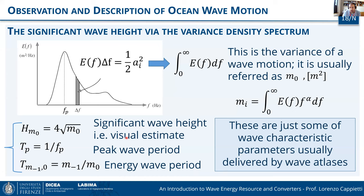A clarification on the formula: Mi is the spectral moment. When you set alpha equal to zero, you obtain M0, which is the integral of the spectrum. Since the spectrum represents variance for each frequency, taking the integral gives the total variance. The equation is correct.